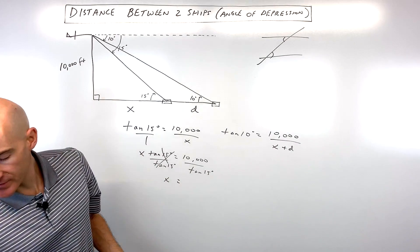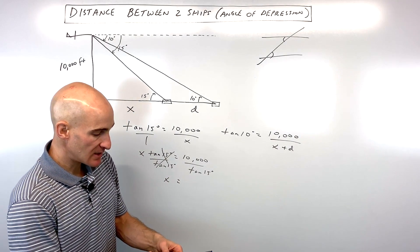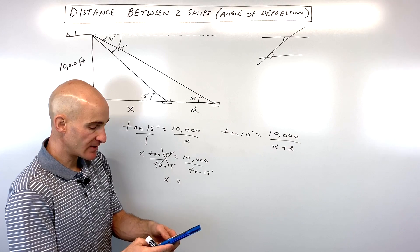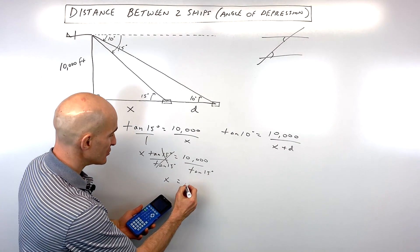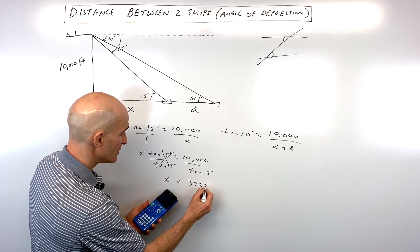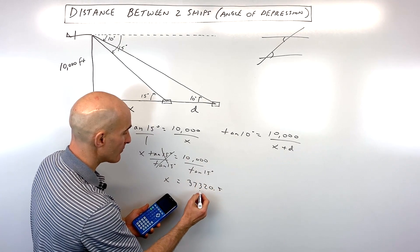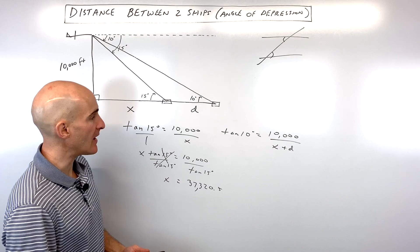And let's go to the calculator on this one, it comes out to 10,000 divided by the tangent of 15. Make sure you're in degree mode on your calculator. That comes out to 37320.5 approximately. So 37320.5.